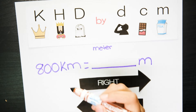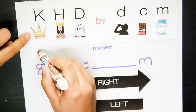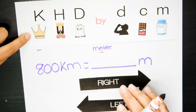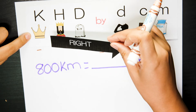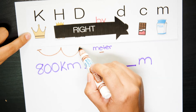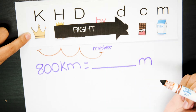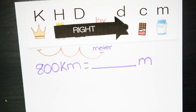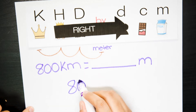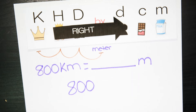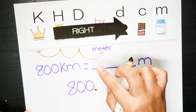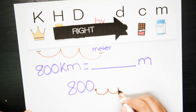If I am moving from kilometer, which is here, and I'm moving to meter, I need to shift to the right. I'm going to move to the right — one, two, and three spaces. So that's what you're going to do with your decimal point. Don't forget that at the end of each whole number, you have an invisible decimal point. You need to shift your decimal point to the right one, two, and three spaces.